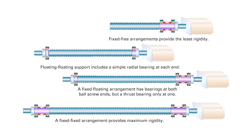So if a ball screw assembly isn't sufficiently rigid for the application — that is, if it experiences too much axial deflection — one of the first criteria to consider changing is the end bearing arrangement.